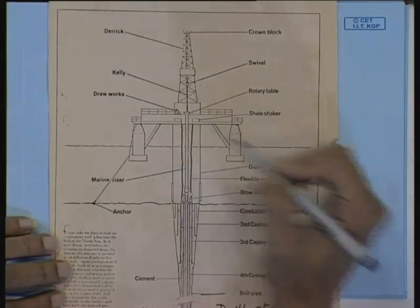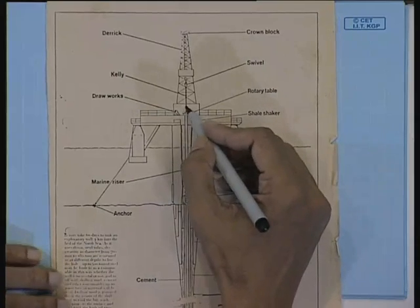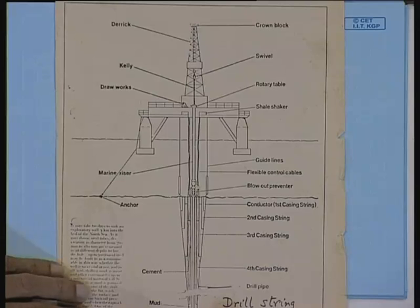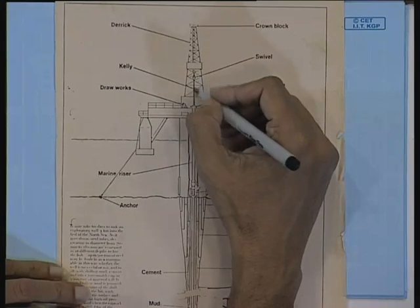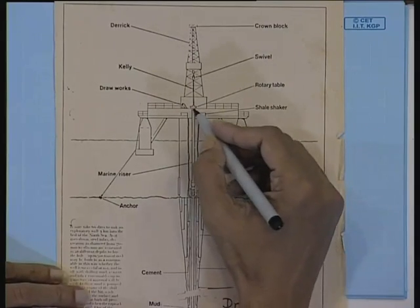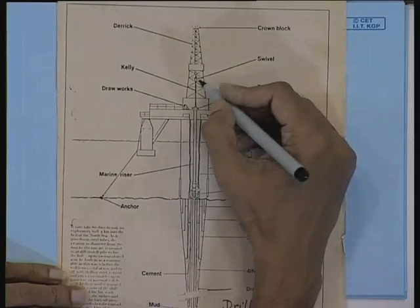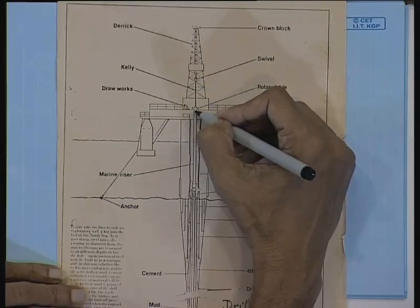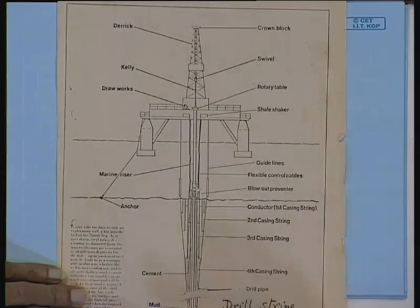As the rotary table is rotated, the whole drill string goes down, so the borehole gets deeper. The drill pipes come in 30-foot lengths. One length of pipe goes down, dragging the kelly, and this joint comes down. After the whole length of kelly has gone down, the whole drill string is taken up.